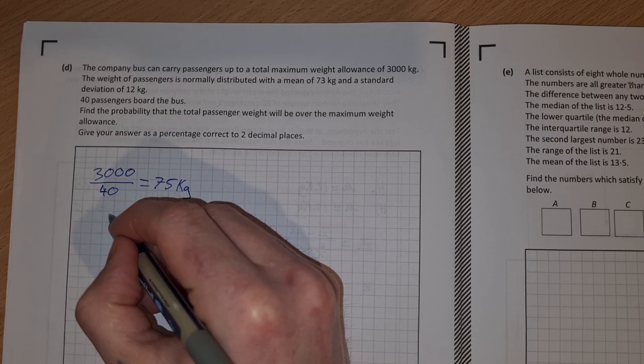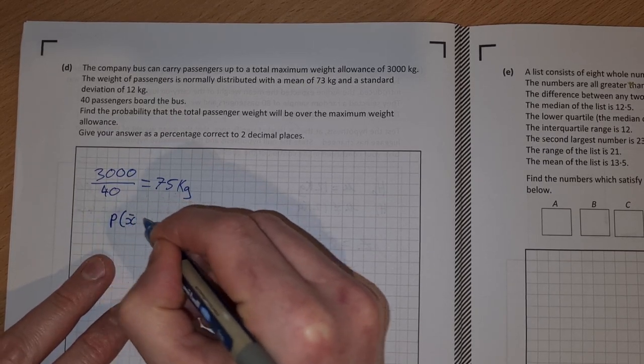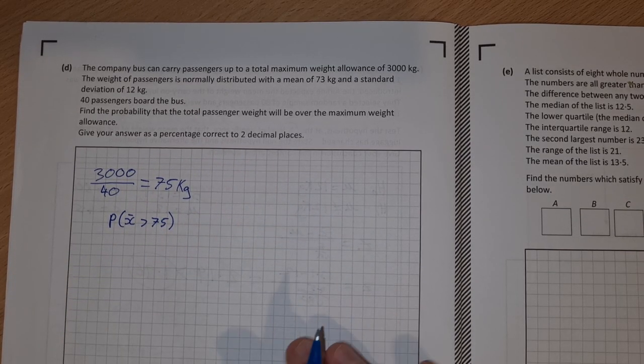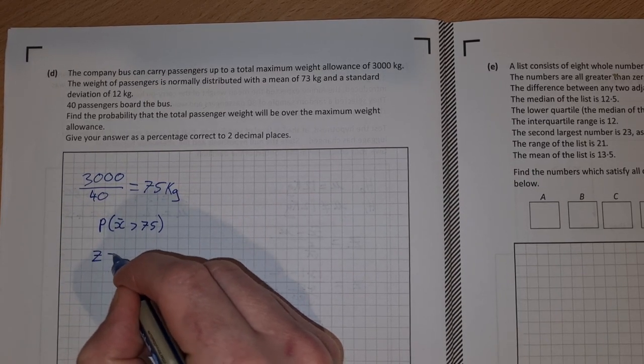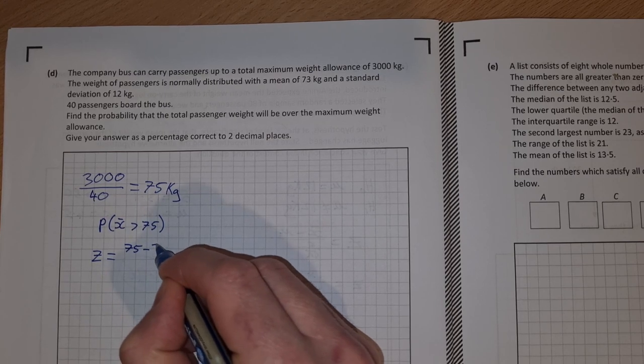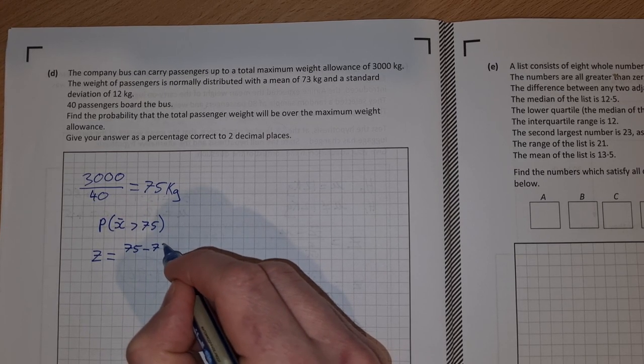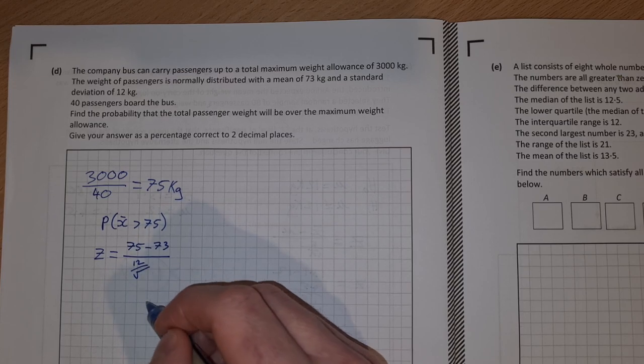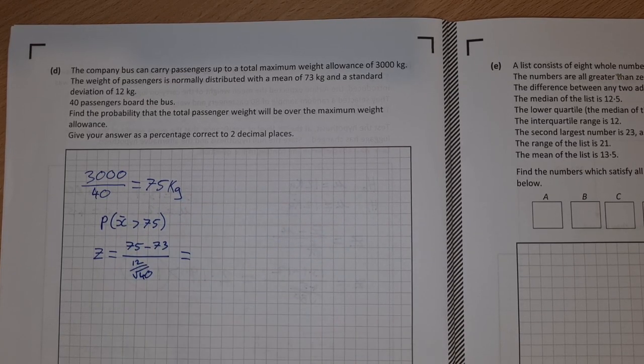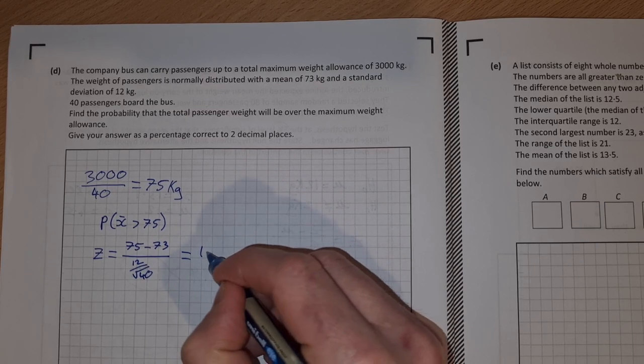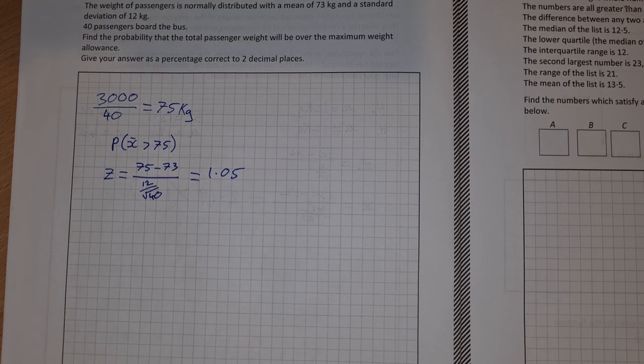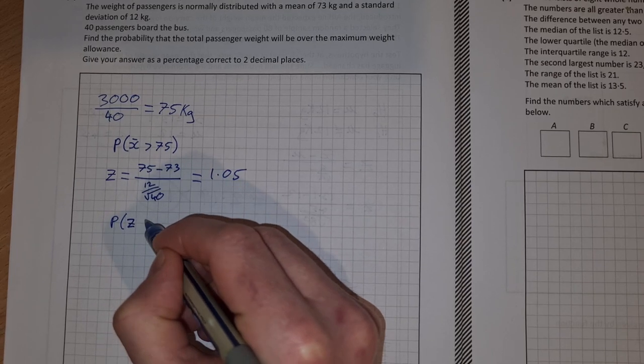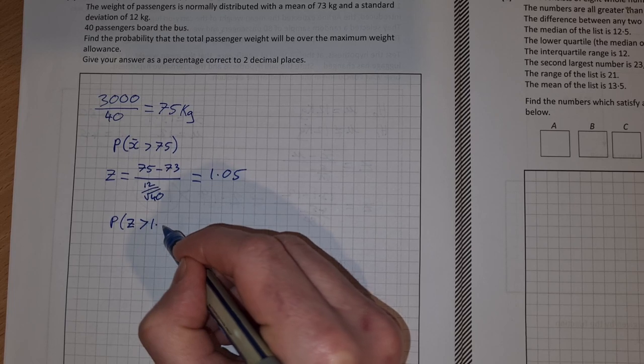To do this, we're going to find the probability that our mean is greater than 75. To do that, we get our z-score. It'll be 75 minus our mean which is 73, sigma over root n. Sigma is 12 and root n was 40. If you put that into your calculator, you get a z-score of 1.05. So if we have our z-score of 1.05, we want to know what's the probability that our z-score is greater than 1.05.